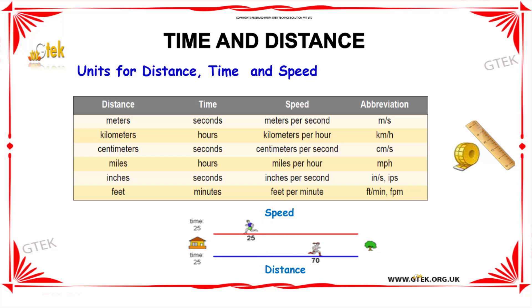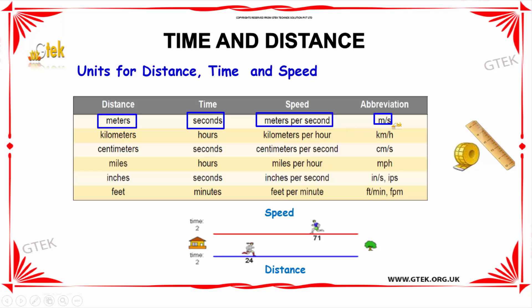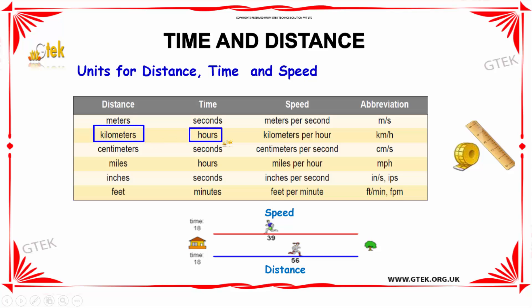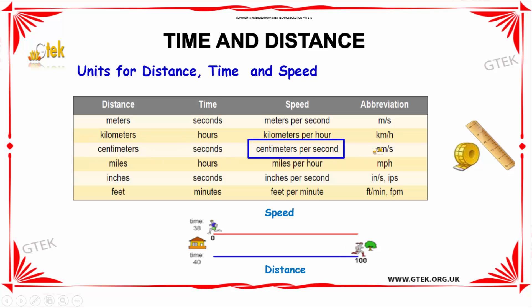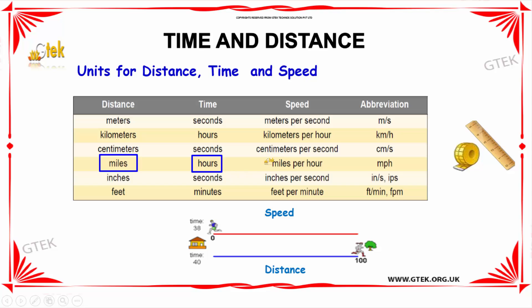The table describes in detail the units of distance, time, and speed. If the distance is given in meters and the time in seconds, then the speed is meters per second, abbreviated m/s. If the distance is in kilometers and the time is in hours, then the speed is kilometers per hour, abbreviated km/h. If the distance is in miles and the time is in hours, then the speed is miles per hour, abbreviated mph.